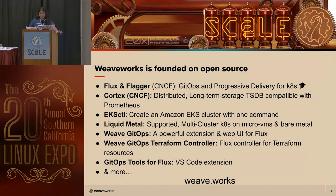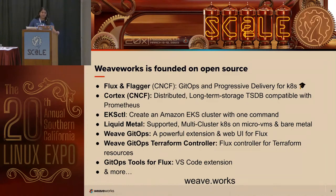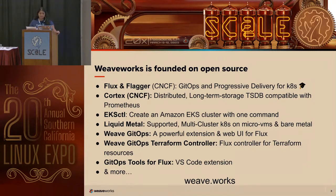Another project we have is Cortex, another CNCF project that helps make Prometheus scalable. Prometheus is a key part of the progressive delivery possibilities with Flagger. I'll mention Flagger later in the talk. We have a lot more projects as well, so if you're interested, definitely check us out on GitHub under Weaveworks, as well as within the CNCF.